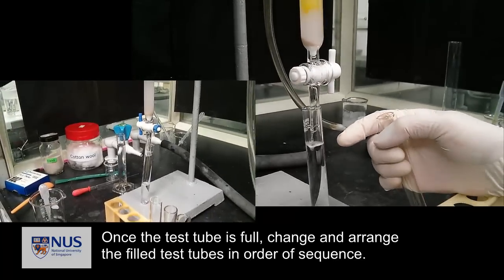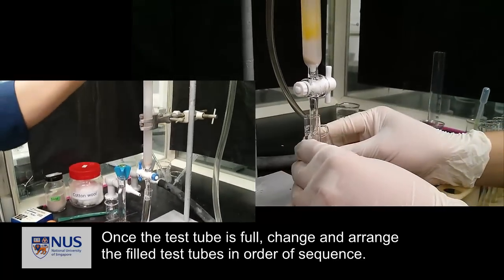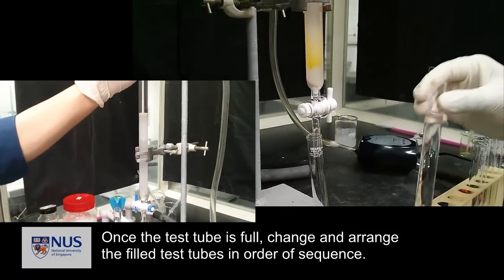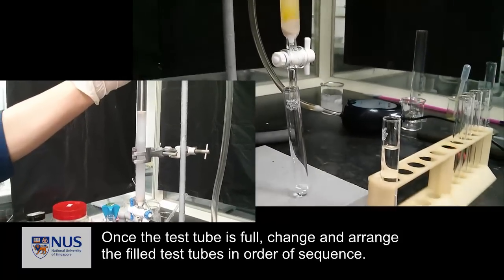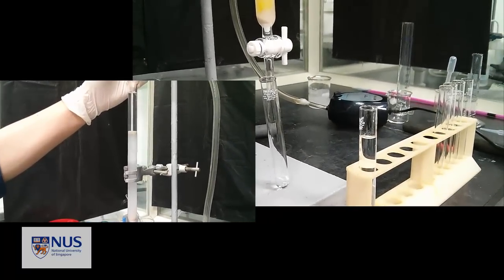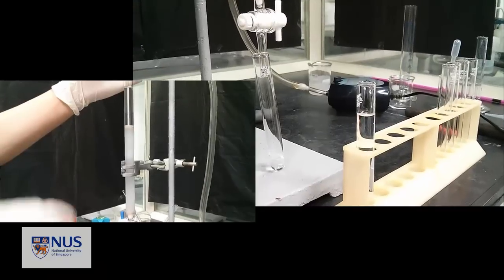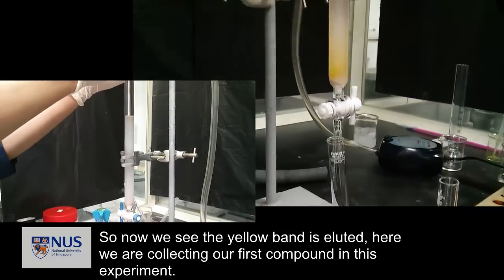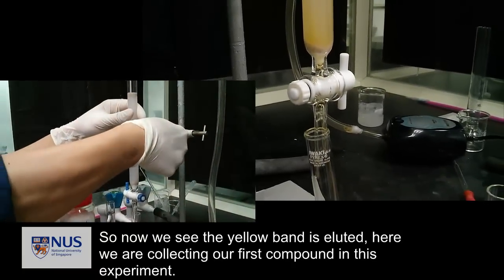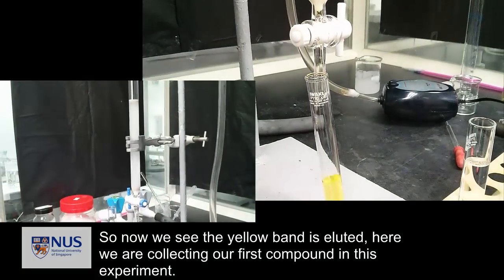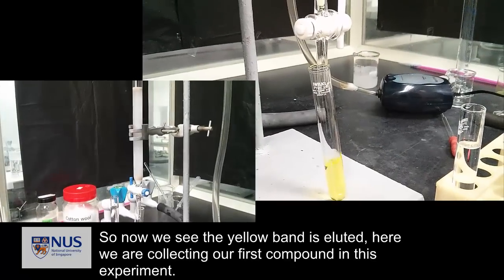Once the test tube is full, change and arrange the few test tubes in order of sequence. You can see the yellow band is eluted. Here we are collecting our first compound in this experiment.